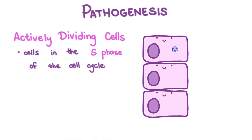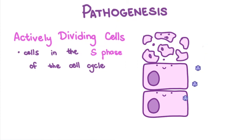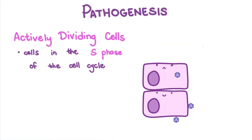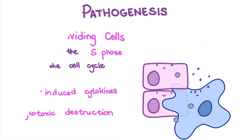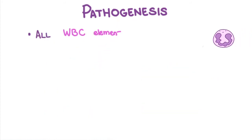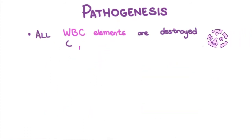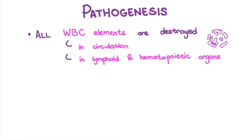These infected cells are prevented from entering mitosis and eventually killed. Moreover, there may be indirect effects on uninfected cells caused by the release of virus-induced cytokines. Uninfected cells with virus particles present on their surface may also become targets for cytotoxic destruction. All white blood cell elements are destroyed — not only those in circulation, but also the actively dividing precursors in the lymphoid and hematopoietic organs. This results in the panleukopenia part of feline panleukopenia.